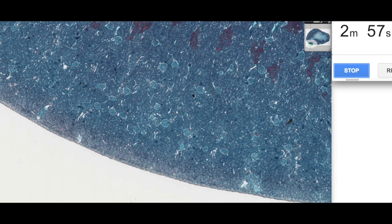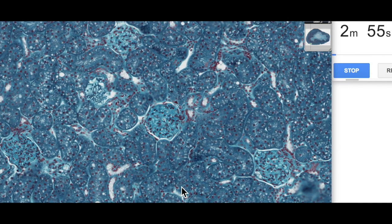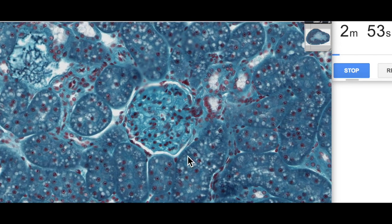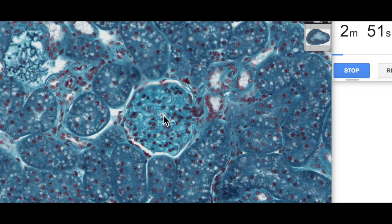If we zoom in on one of these renal corpuscles, we can have a look at a bit more detail. Here's the renal corpuscle. Scattered around we've got our proximal convoluted tubules, a couple of distal convoluted tubules here, and something special going on here called the macula densa, which we'll talk about in a little while.